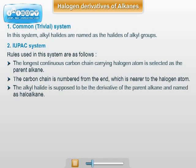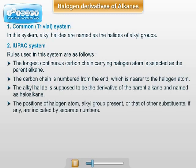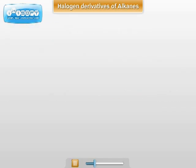Rule number four: the position of the halogen atom and alkyl groups present, if any, are indicated by separate numbers. Both the common system and IUPAC system names of alkyl halides are illustrated in the following table.